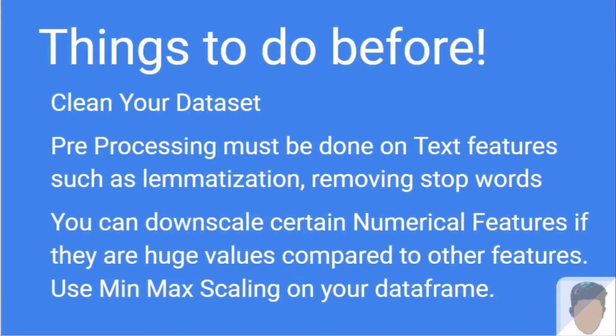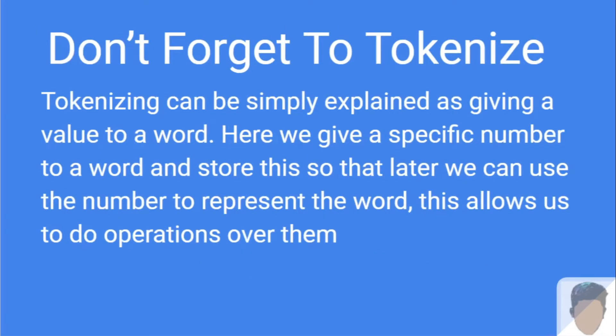There are important things to do before building the model. We can't jump right into the model — first we have to clean our dataset, then pre-process it. Pre-processing is very important especially in natural language processing. We should downscale numerical features. The next step is tokenizing — we have to tokenize our text corpus. Tokenizing means giving a value to a word, for example: 'python' gets 0, 'is' gets 1, and 'simple' gets 2, so we can mathematically interpret these texts.